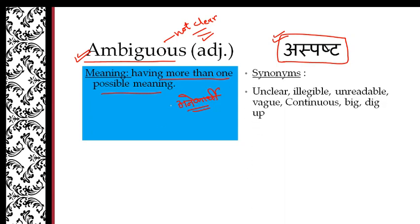Let's see its synonyms. Synonyms means similar words. Now we can call it similar meanings. Unclear, illegible, unreadable. Unreadable, you have written unreadable but you are not able to read it. You will not be able to read it because it is not clear, it is just a scrawl.